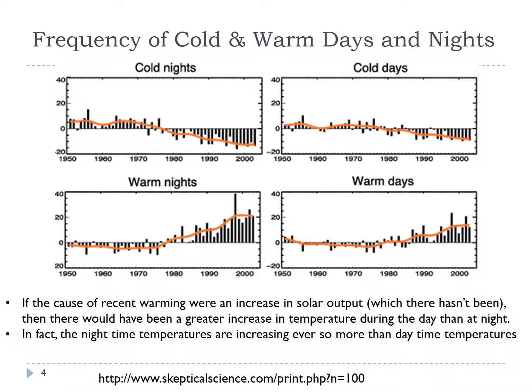If the sun were the cause of warming, we would expect to see a greater increase in daytime temperatures than nighttime temperatures. But that's actually not what we find — nights are ever so slightly warming more than days. This is one of the many reasons we know it's not the output of the sun causing what we call global warming, which is the increase in temperatures over the last 100 or 50 years.